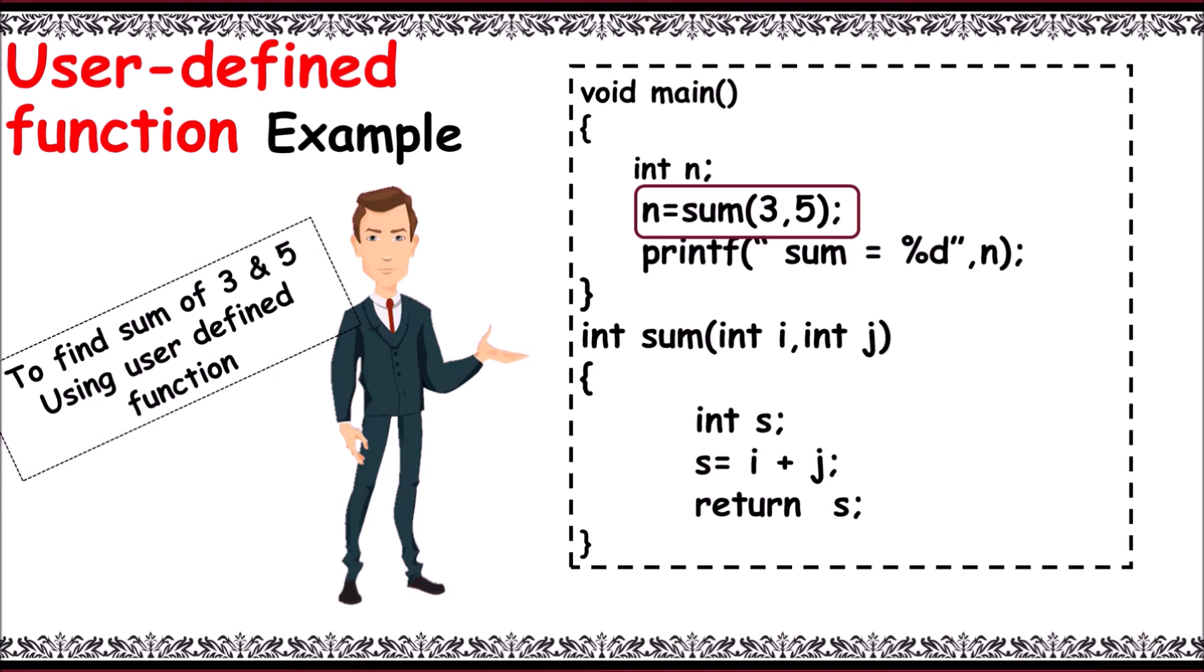Here, sum is a user-defined function call to add 3 and 5. The control jumps to function definition named sum of int i, int j, where i equals 3 and j equals 5 are stored. The function works and declares s. s equals i plus j. Sum of 3 and 5 is performed and stored in 8.